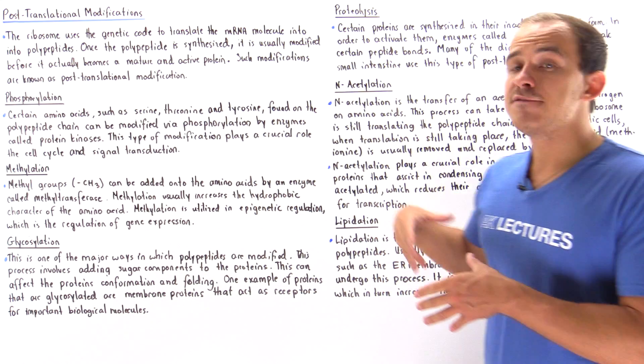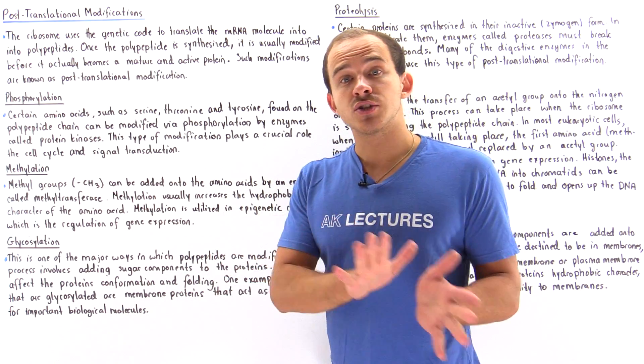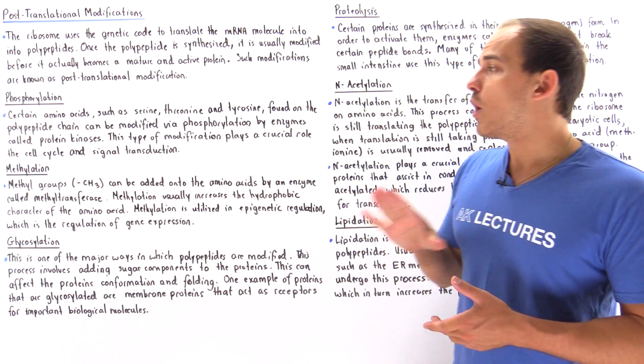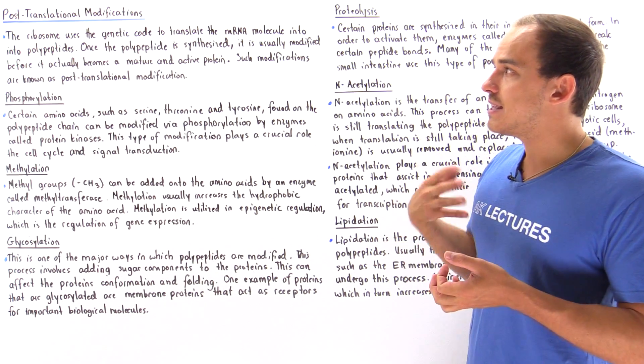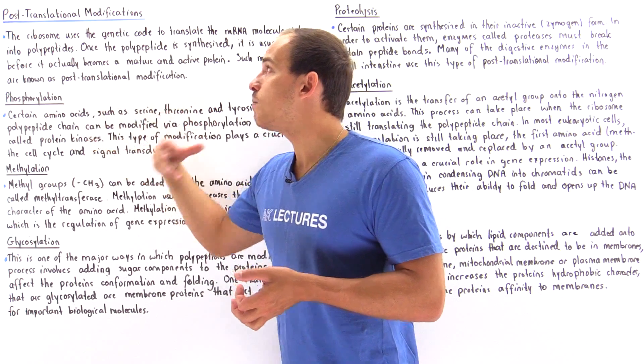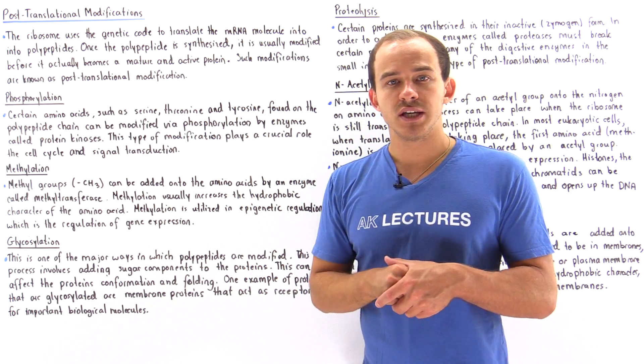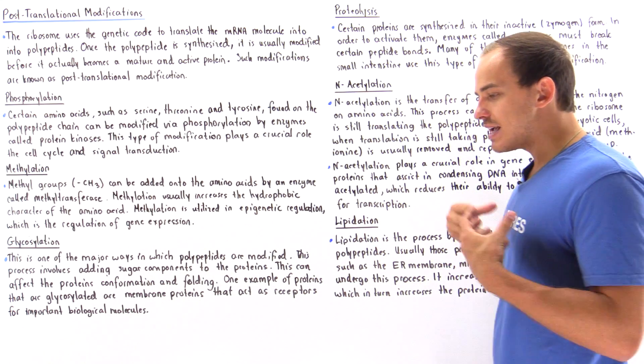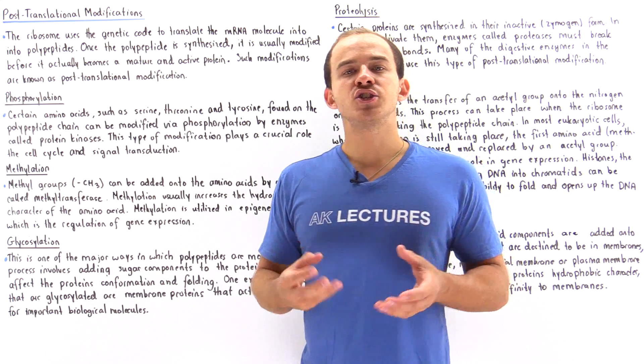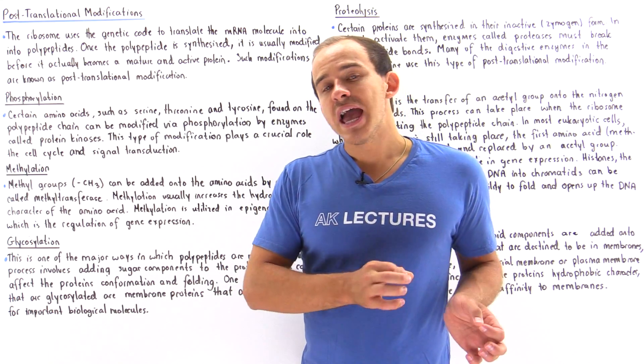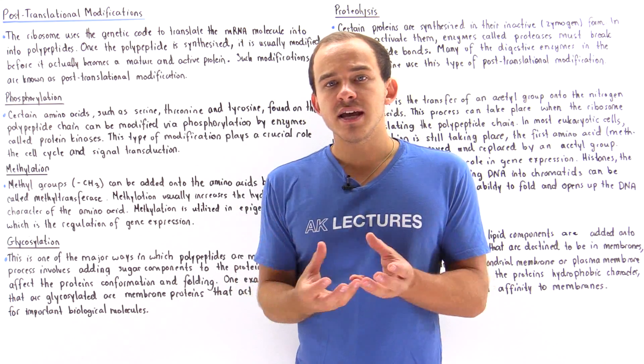There are actually even more processes than we discussed in this lecture, and we'll discuss those in more detail when we get into biochemistry. Another type of process that takes place following translation is the folding of the protein. In order for the polypeptide to actually become active, it has to fold into the proper three-dimensional form. Special types of proteins known as chaperones assist in this folding process.